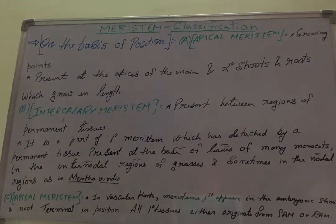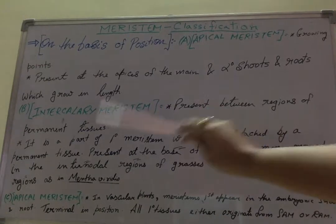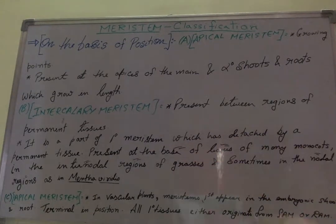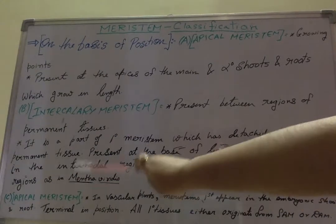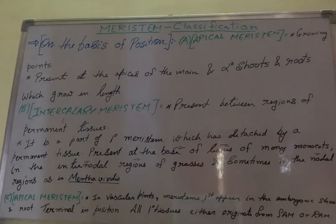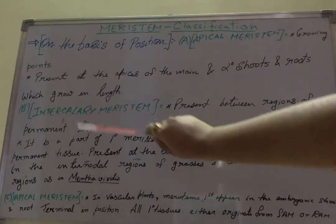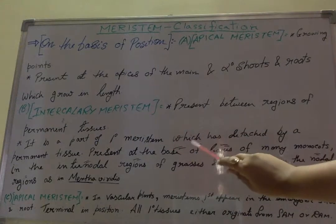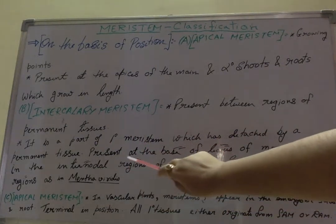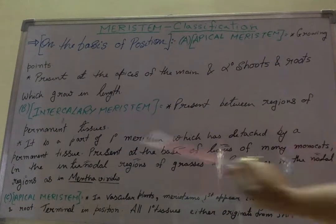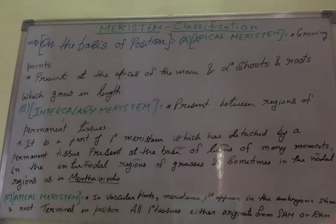Intercalary meristem is a part of primary meristem which has been detached by a permanent tissue. It is present at the base of leaves of many monocots, in the internodal regions of grasses, and sometimes in the nodal regions, as in Mentha viridis — the mint plant. So intercalary meristem is found between regions of permanent tissues, at the base of leaves of monocots, in internodal regions of grasses, and in nodal regions as in Mentha viridis.